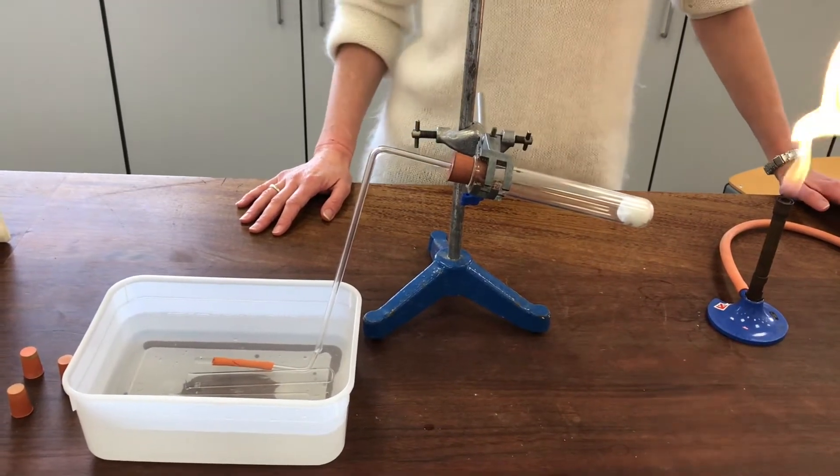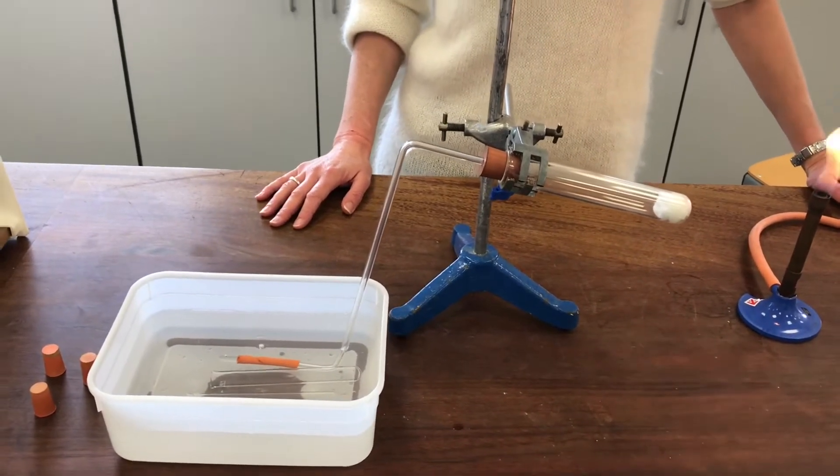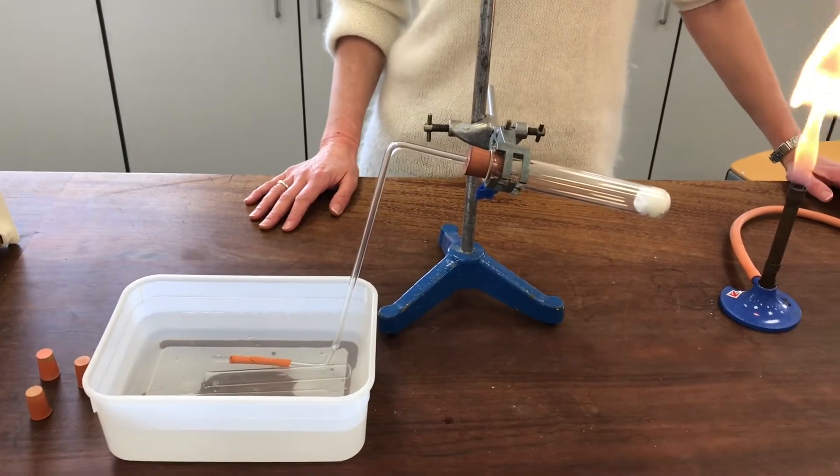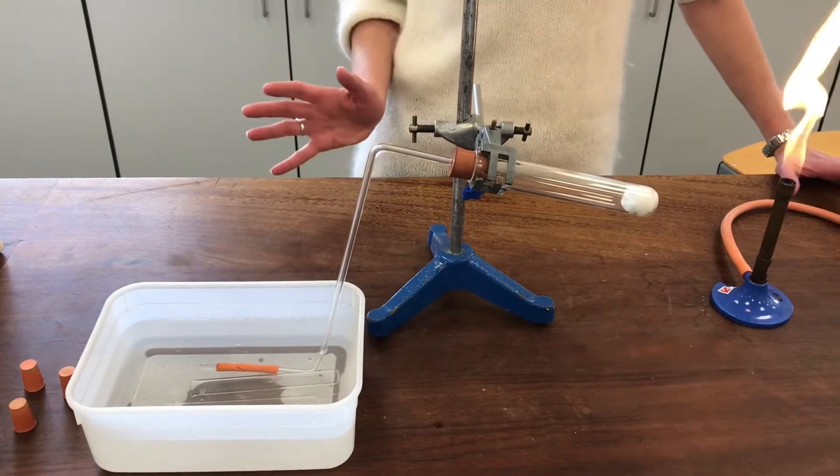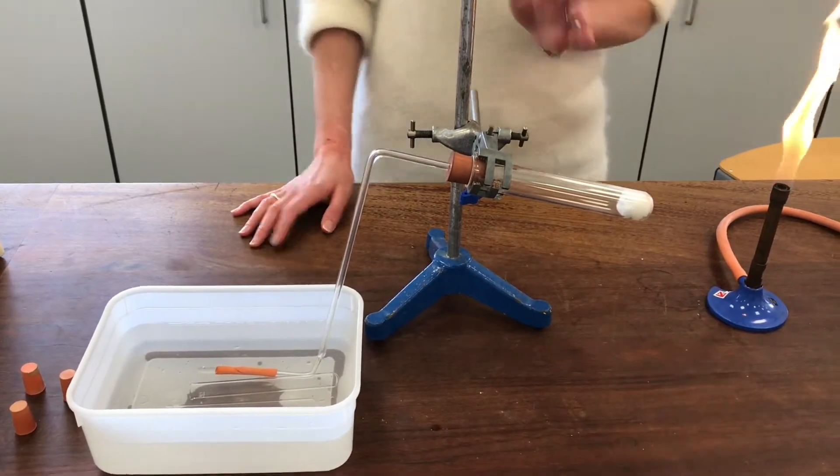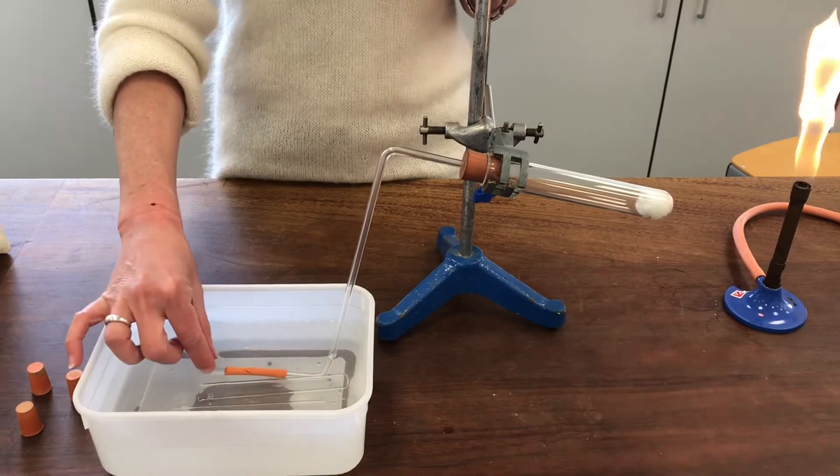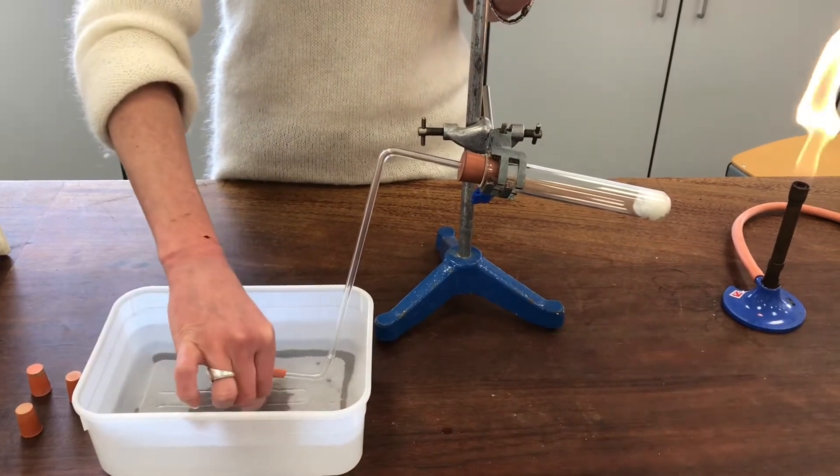Okay, so in this experiment we're going to have a look at what happens when we heat a halogenoalkane with some potassium hydroxide that's been dissolved in ethanol. There's no water in this mixture at all. I'm just going to heat it and I'm expecting a gas is going to form, and I will collect that here by displacement.